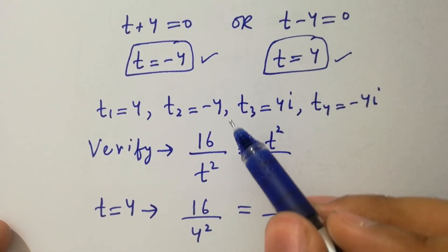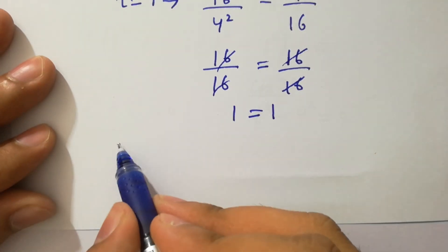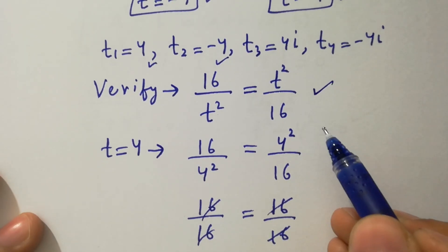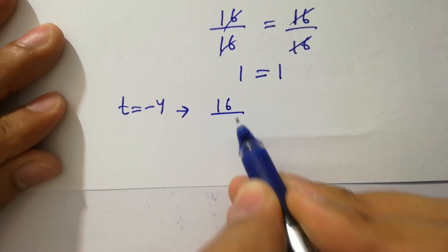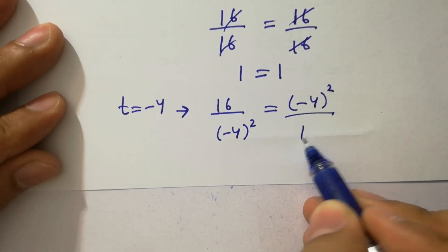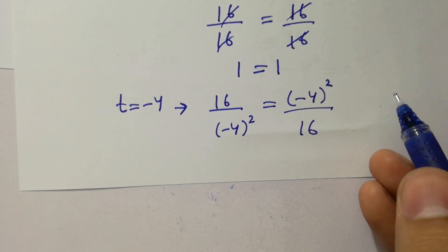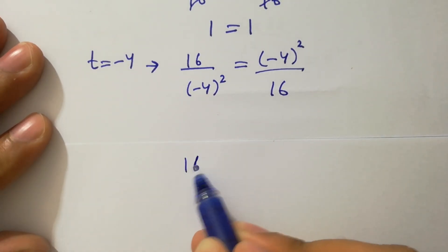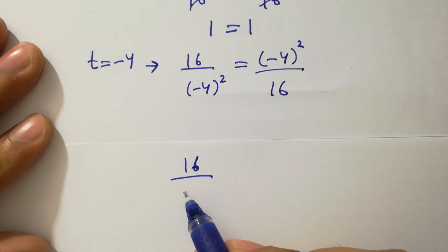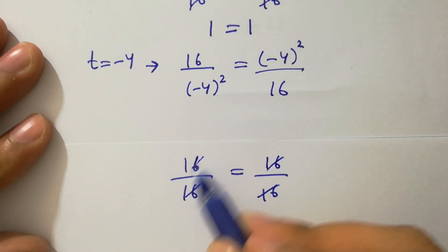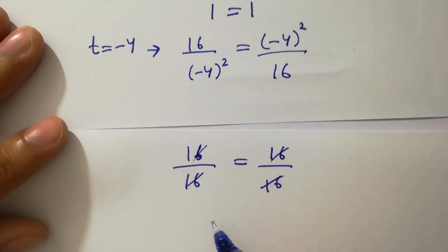Now take t equals minus 4 and put it into the equation. We have 16 over minus 4 square equals minus 4 square over 16. Since minus 4 squared is 16, we get 16 over 16 equals 16 over 16, so 1 equals 1. Left hand side equals right hand side.